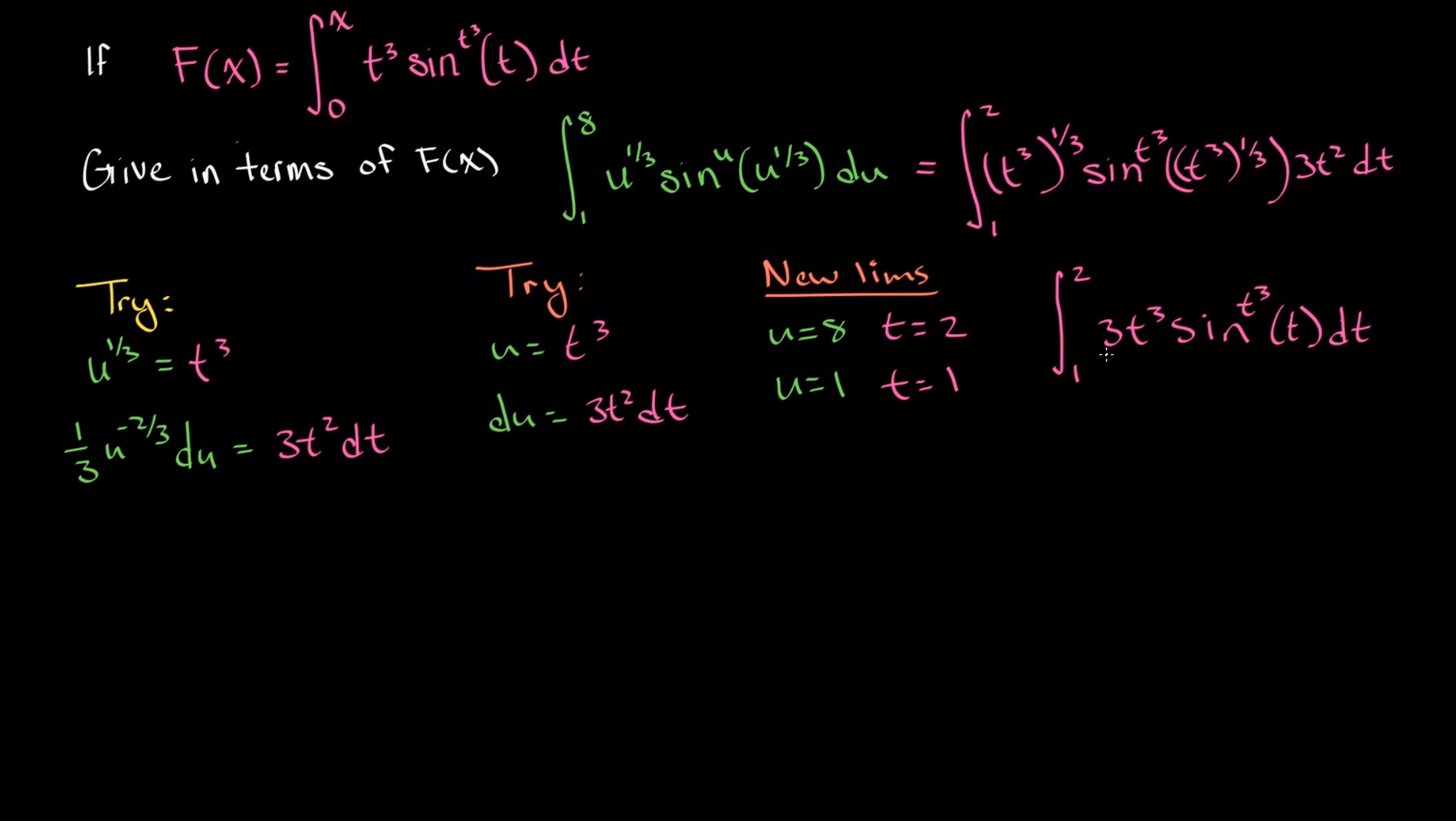So what you can see here, we can take this 3 out of this integral, it's a constant, and we have the same integrands. So finally, all we need to do is use the fundamental theorem of calculus and leverage this definition of capital F of x. We have 3 times F of 2 minus F of 1. So this is our answer here.